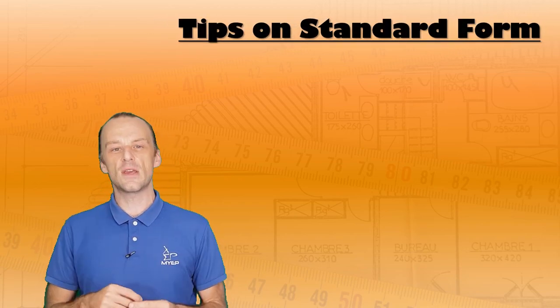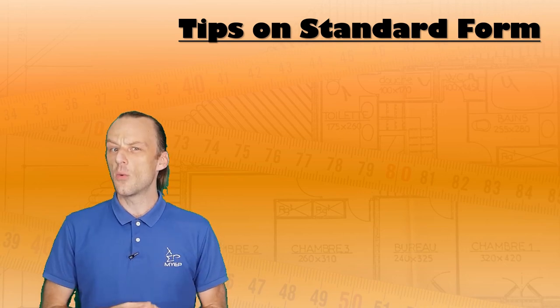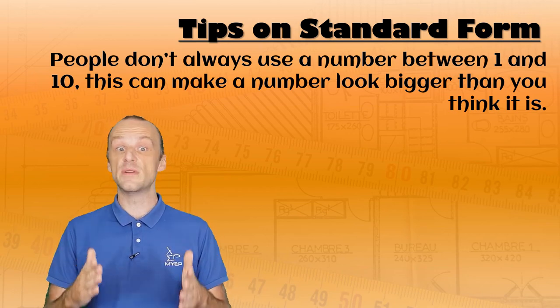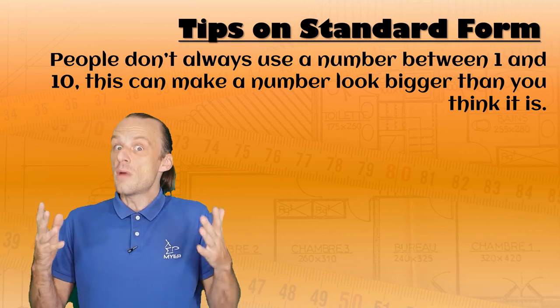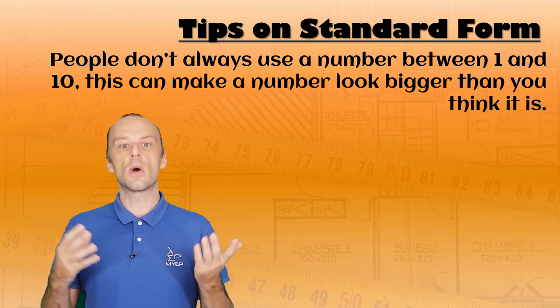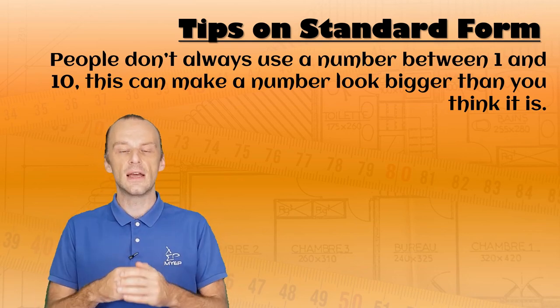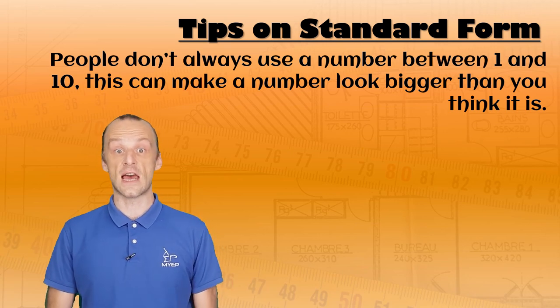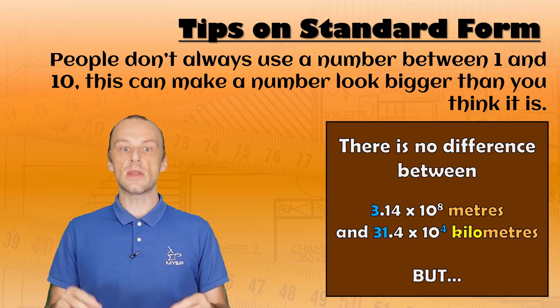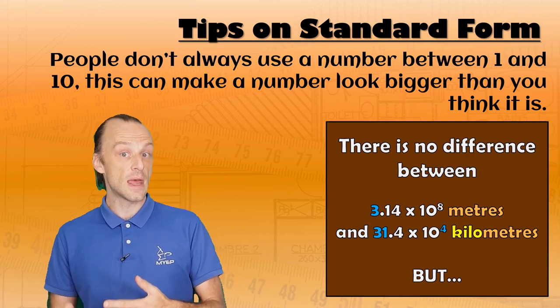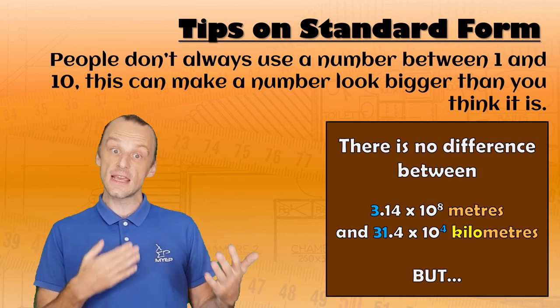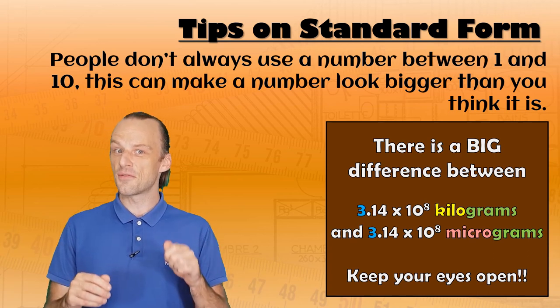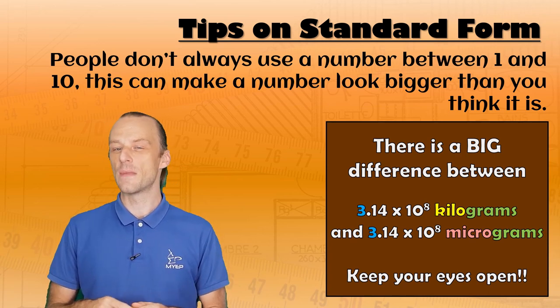Getting used to standard form can be a bit confusing at first, so here are a few tips that I hope will help you to understand it. First, people don't always stick to the rule of making our standard form number between 1 and 10. That's what you should do, but you might see 314 million written as 31.4 times 10 to the power of 7, for example. This can change how big the number looks, especially if they're also going to use the named orders of magnitude we looked at before. For example, there is no difference between 3.14 times 10 to the power of 8 meters, and 31.4 times 10 to the power of 4 kilometers. And there is a big difference between 3.14 times 10 to the power of 8 kilograms, and 3.14 times 10 to the power of 8 micrograms. Keep your eyes peeled.